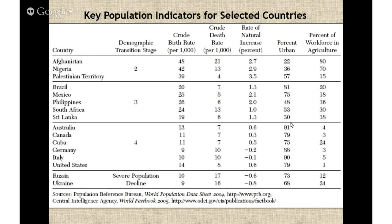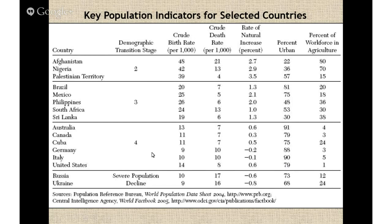Australia is an example of a stage four country, with a very high percentage of urban population — most cities are on the coastline, so not many people live in rural areas. Canada, despite having a huge area of land, is 79% urban population, and the US is at roughly the same rate. You can pause and look at these numbers and fit them in with the demographic stages.